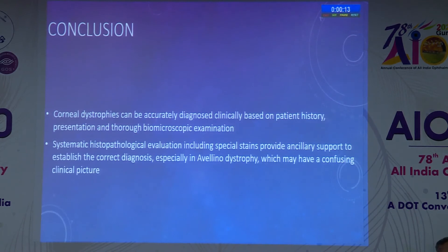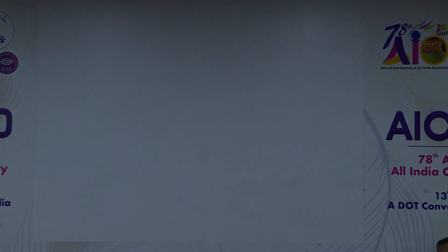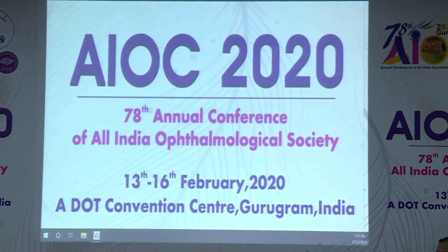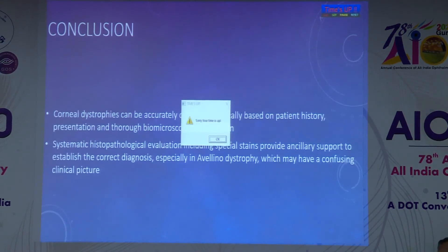Question: Which stains were used for diagnosing dystrophies? For lattice dystrophy we used Congo red, for granular dystrophy we used Masson trichrome, and for macular dystrophy we used Alcian blue. Colloidal iron stain was also used.